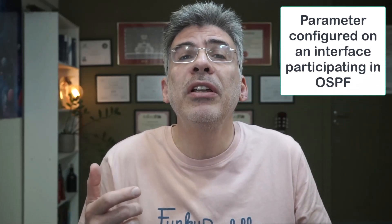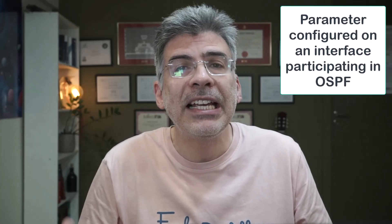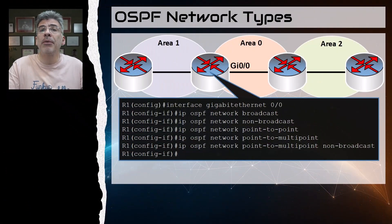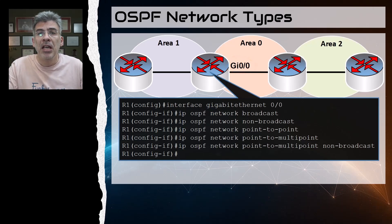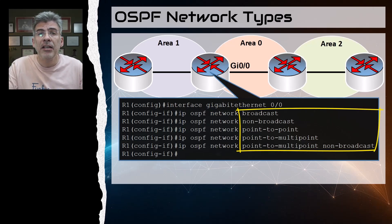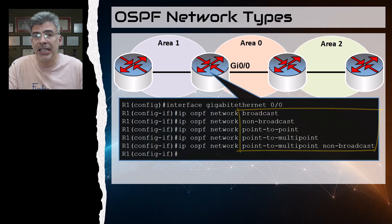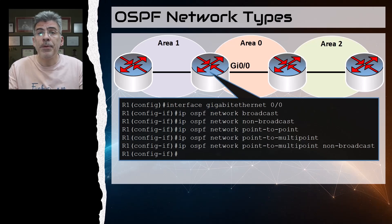So what are OSPF network types? An OSPF network type is a parameter that you configure on an interface that is participating in OSPF. The network type you configure will affect how OSPF will behave. This diagram shows all of the possible configurations you can apply to the gigabit Ethernet 0/0 interface for the purpose of allowing OSPF to operate differently. The available network types are: broadcast, non-broadcast, point-to-point, point-to-multipoint, and point-to-multipoint non-broadcast.